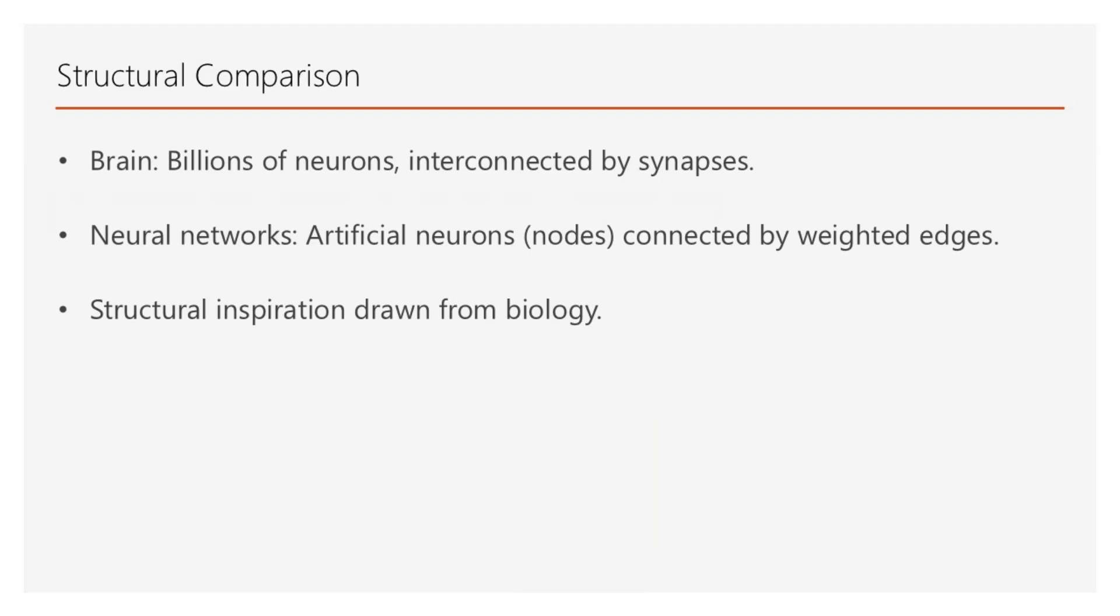The brain is a biological organ made up of billions of neurons, specialized cells that transmit signals interconnected through synapses, junctions where neurons communicate chemically or electrically. Neural networks, on the other hand, are mathematical models composed of artificial neurons organized into layers, connected by weights. These artificial systems draw their structural inspiration from the biology of the brain.